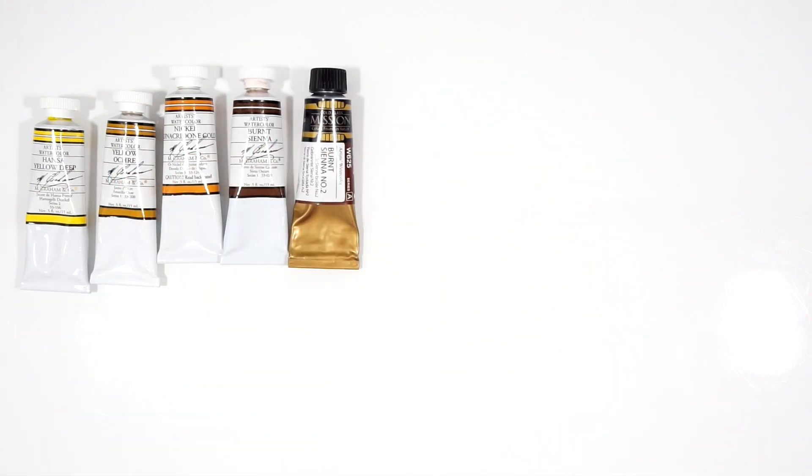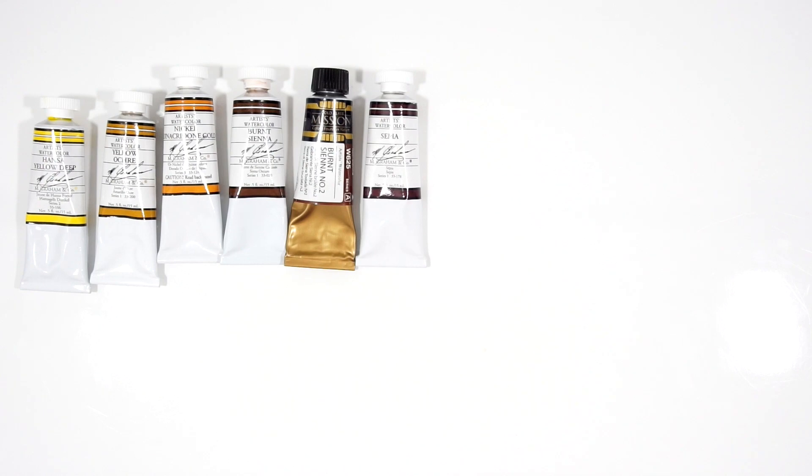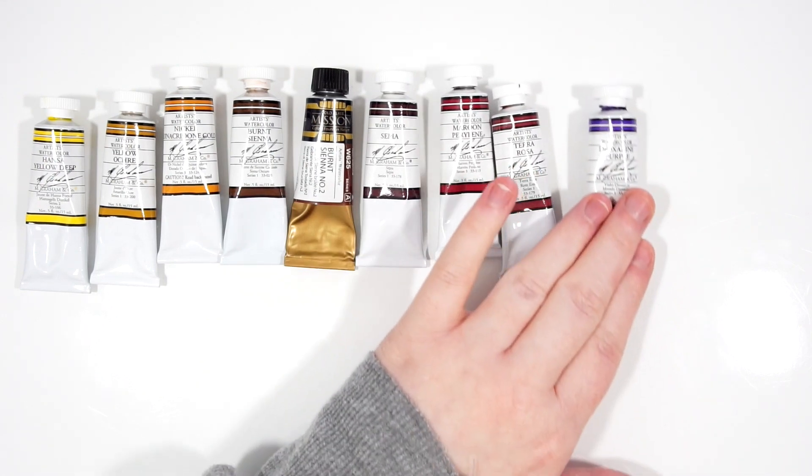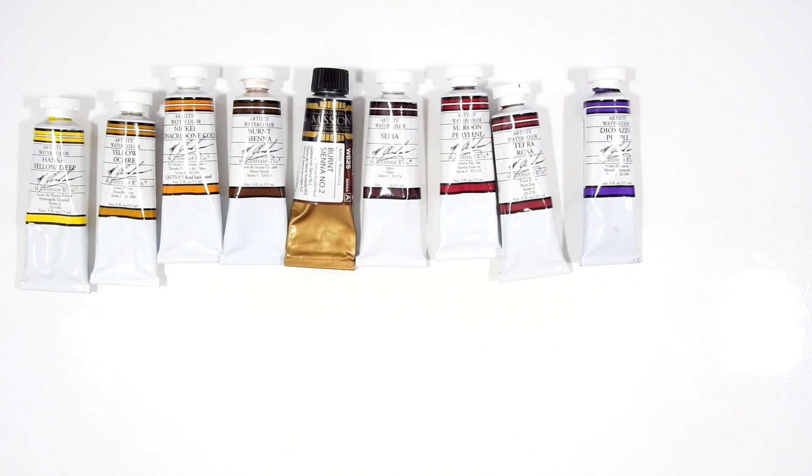The materials that I'm using are Ponzi Yellow Deep, Yellow Okra, Nickel Quinacridone Gold, Burnt Sienna, Burnt 2 from Mission Gold, Sepia, a deep red like maroon perylene or Terra Rosa, and a dioxazine purple.